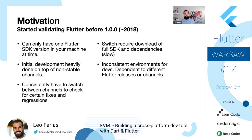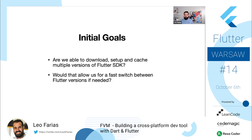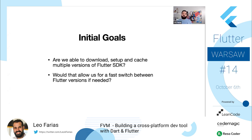FVM had initially two very simple goals. First: are we able to download, set up, and cache multiple versions of the Flutter SDK? Second: would that allow us to fast-switch between Flutter versions if needed? By having multiple versions cached, could we switch between versions fairly easily?